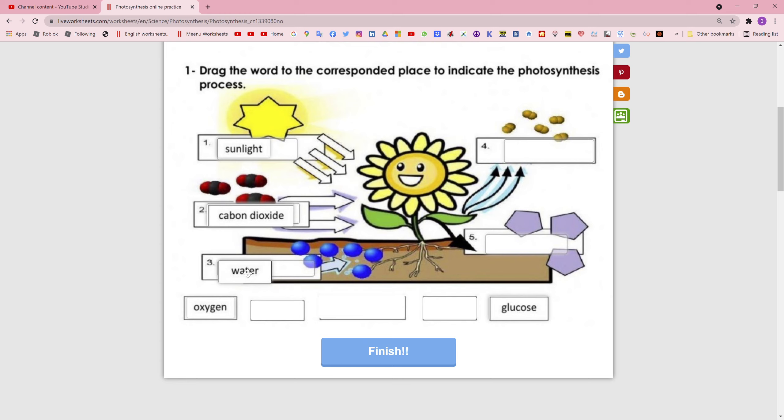This is water right here. It gets water from its roots. Right here is oxygen and this is glucose.